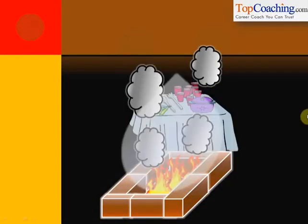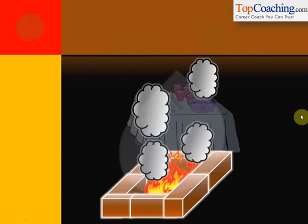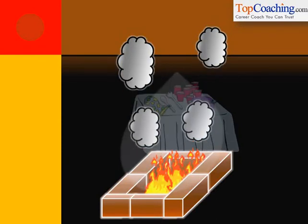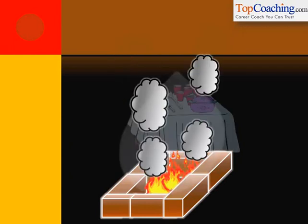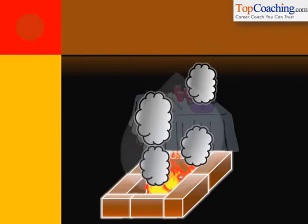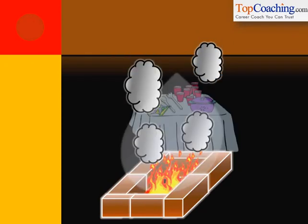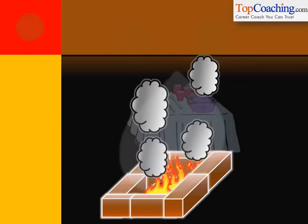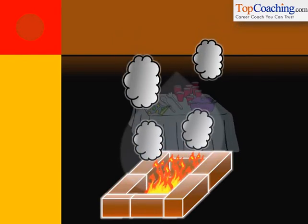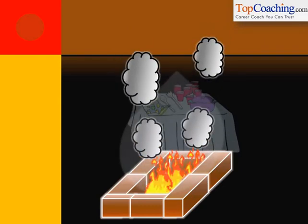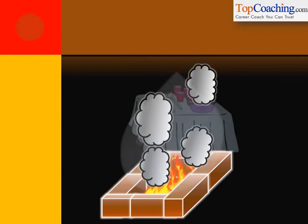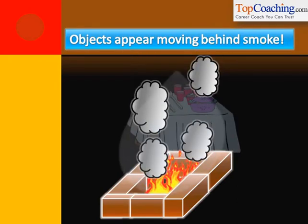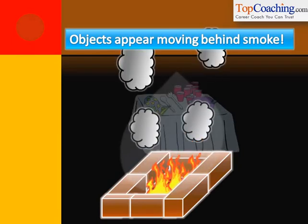Before we study why stars twinkle, let's understand a common day-to-day effect of refraction. You must have noticed in your daily life that whenever there is a fire burning and smoke is coming out, the objects behind the smoke actually appear to be moving. You can even try this today — visit any roadside vendor who sells burgers or popcorn. You will see smoke rising up from his gas stove, and behind the smoke, people or objects appear to be moving, not stationary. This is a very common day-to-day effect.